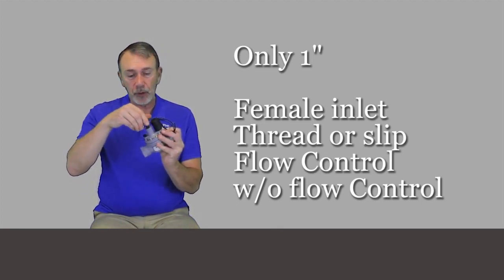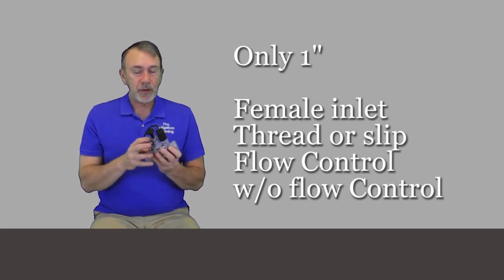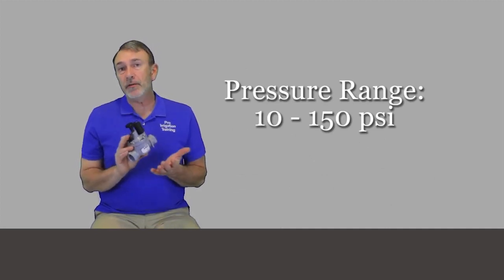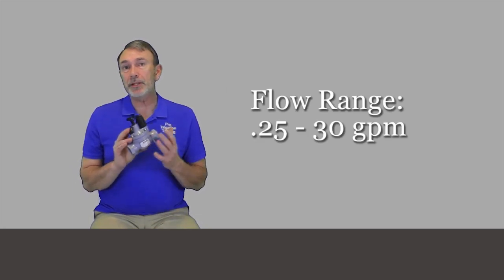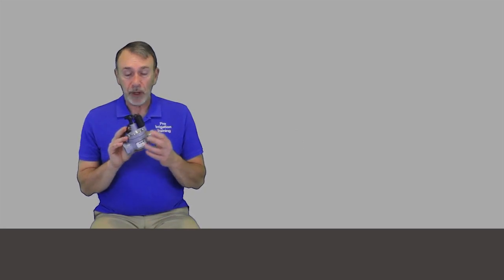Obviously, this one has a flow control on it. The specs on this for the operating pressure range is 10 to 150 PSI. The flow range on it is 0.25 through 30 gallons per minute. It runs really good at low flows—0.25 is one-fourth of a gallon per minute, so it's a great valve to use with low flow drip systems.